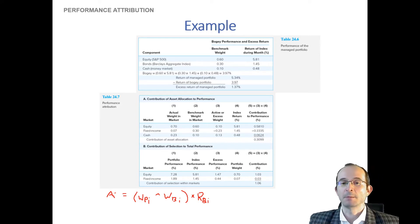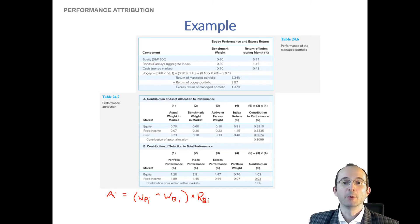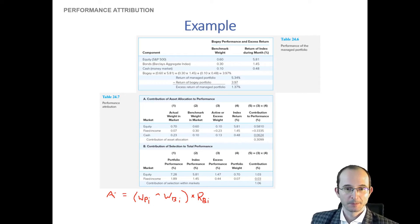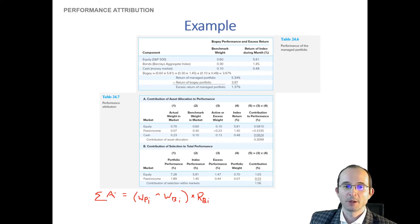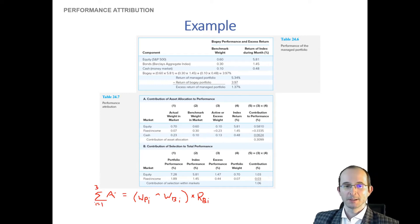All taken together, this adds up to about 3.1% — wait, it tells us this is a positive allocation effect. We improved performance by 0.31% due to making better allocation decisions between these three asset classes. We're summing up the allocation effects across all three asset classes in this example.